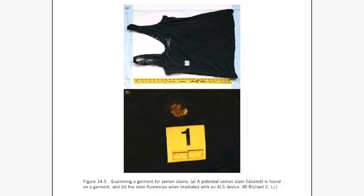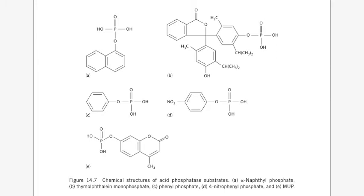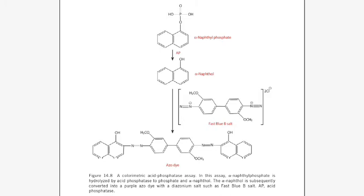In the Florence test, a drop of water solution of the stain is placed on a glass slide and dried. A drop of Florence reagent is then added. If it gives dark brown crystals resembling hemin crystals, it is a clear indication that it is a semen stain. The crystals form due to the formation of choline periodide, because the Florence reagent consists of potassium iodide and iodine in water, which reacts with the stain.